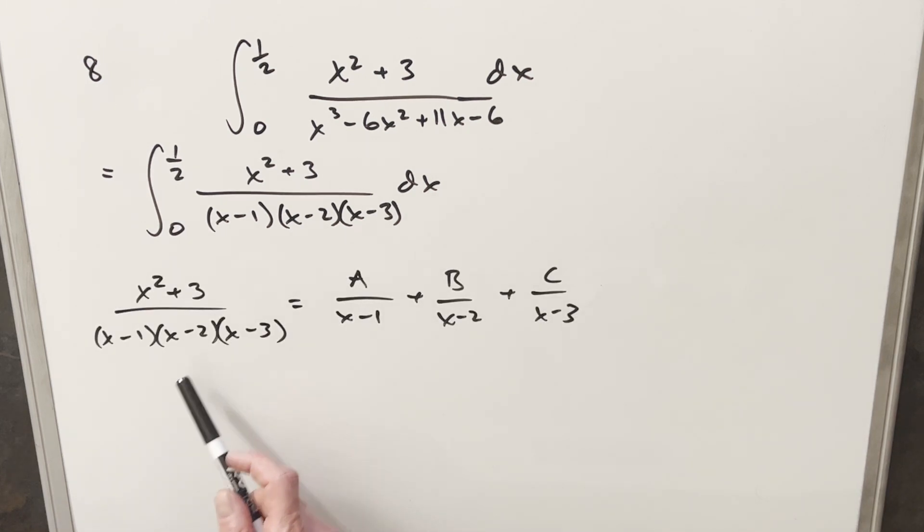And so from here, it turns out this is a pretty convenient case for partial fractions just because every term is linear. So we can just have constant terms A, B, and C that we need to find.